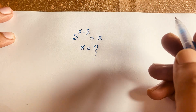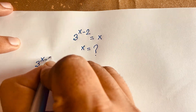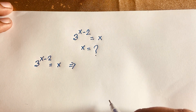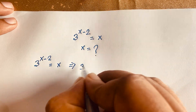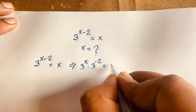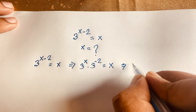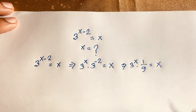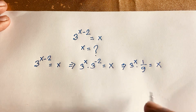Now let's solve this properly. Our equation is 3 to the power x minus 2 is equal to x. According to exponential law, this becomes 3 to the power x times 3 to the power minus 2 is equal to x. And since 3 to the power minus 2 equals 1 over 9, we have 3 to the power x times 1 over 9 is equal to x.